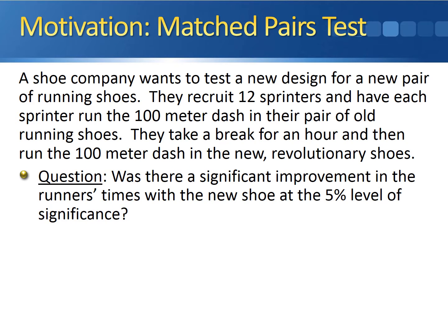A shoe company wants to test a new design for a new pair of running shoes. They recruit 12 sprinters and have each sprinter run the 100-meter dash in their pair of old running shoes. They take a break for an hour and then run the 100-meter dash in the new revolutionary shoes. We want to know if there's a significant improvement in the runner's times with the new shoe at the 5% level of significance.